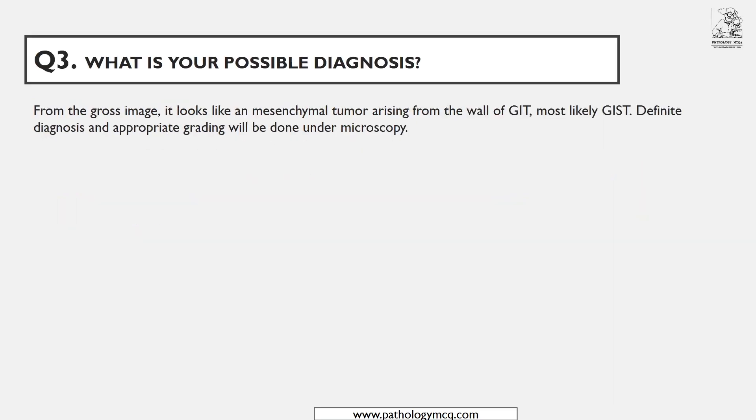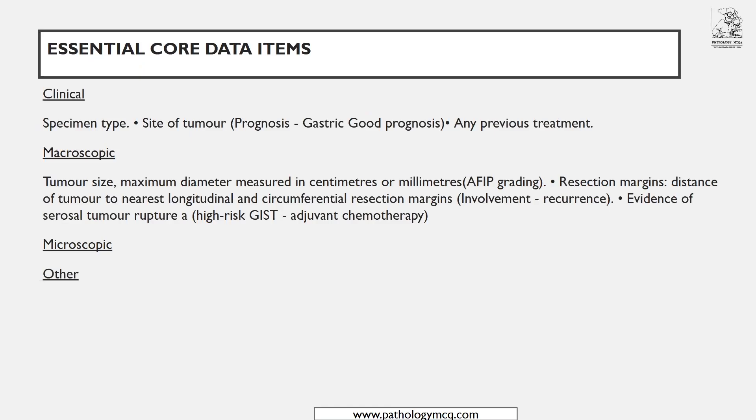For possible diagnosis, write: it looks like a mesenchymal tumor arising from the wall of the GIT, most likely a gastrointestinal stromal tumor. Definite diagnosis and appropriate grading will be done under microscopy. Appropriate grading — whether it is low grade, high grade, or moderate risk GIST — is a core data item and should be mentioned for all cases.